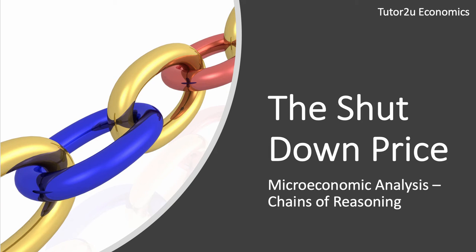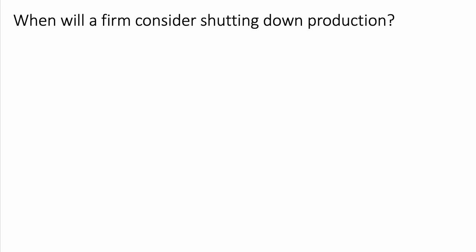Welcome. We're going to look at another micro video and think about how we can build a really good chain of reasoning to improve our analysis marks at A-level. The exam reports are clear - they look for your analysis to be presented as a chain of reasoning, presenting some theory, developing the point you're making to a logical conclusion, perhaps four or five little links in the chain. Here's our question: when will a firm consider shutting down production?